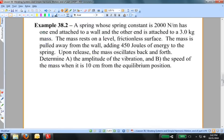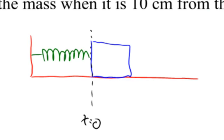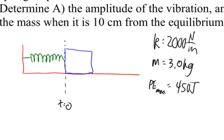Here's the second example. A spring whose constant is 2000 newtons per meter has one end attached to a wall and the other end attached to a 3 kilogram mass resting on a frictionless surface. The mass is pulled away from the wall, adding 450 joules of energy to the spring. Upon release, the mass oscillates back and forth. All of that 450 joules is elastic potential energy — there is no kinetic energy at that point — so the total energy in the system is 450 joules.